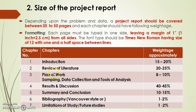You need at least 7 to 8 chapters with weightage as follows. Introduction: 15 to 20 percent of marks. Review of literature: 20 to 25 percent. Plan of work — that is sampling, data collection and tool of analysis: 8 to 10 percent. Results and discussion has the maximum weightage because that is your actual lab work: 40 to 45 percent. Summary and conclusion: 10 to 15 percent, as what you conclude from your research work is also important. Bibliography — what you have materialized in semester 7 as literature review and referencing: 1 to 2 percent. And limitations of the study or future study if you have planned any.